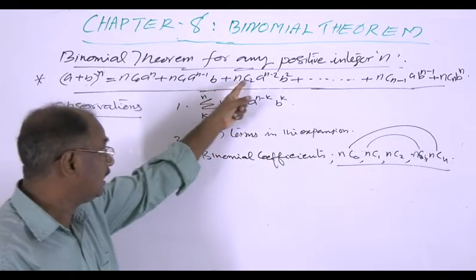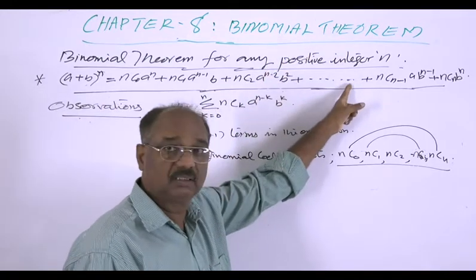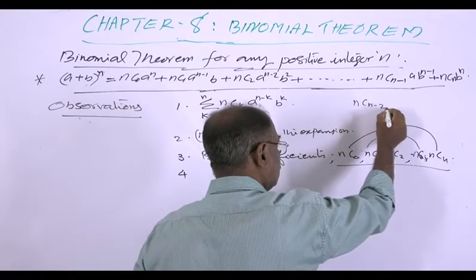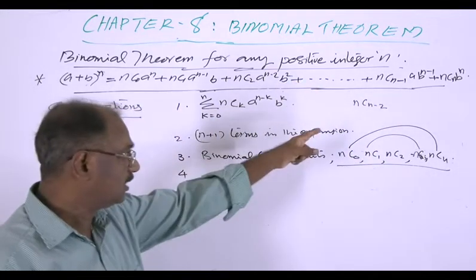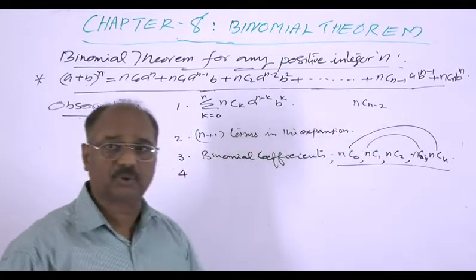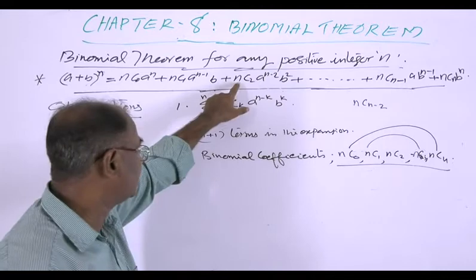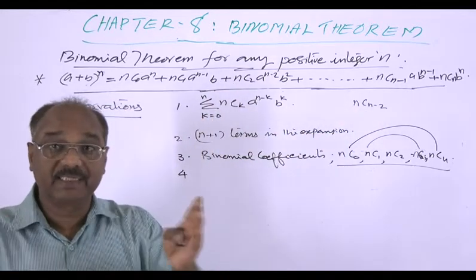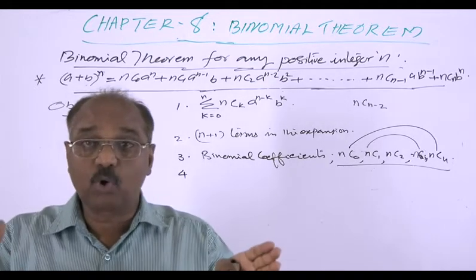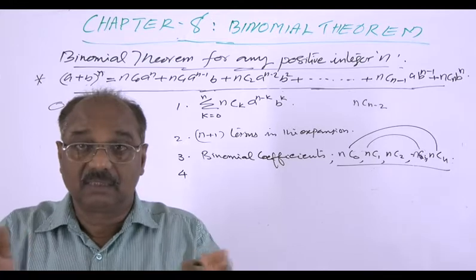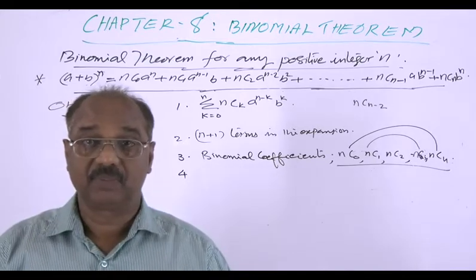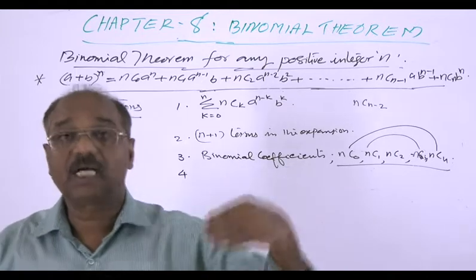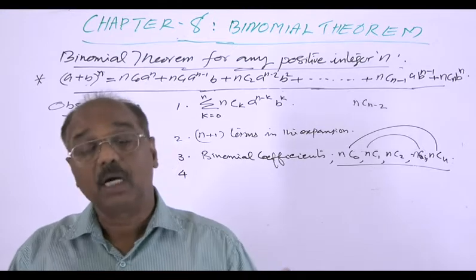Similarly, the next pair: nC2 = nC(n-2). In general, corresponding coefficients from both ends are equal. So: first equals last, second equals last-but-one, third equals next-to-last-but-one, and so on.